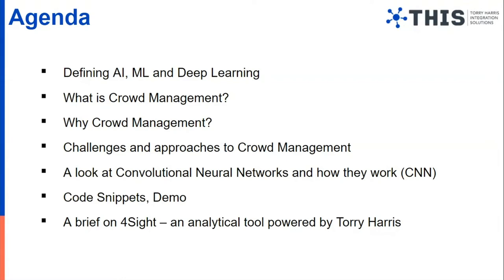Thanks, Kavi. First of all, we will be looking into what is AI, what is ML, and what is deep learning. Then we will look at what is crowd management, why we need crowd management, and what are the challenges and approaches to crowd management. Then we will look at convolutional neural networks and try to understand what they are and how they work, and how they can be used in crowd management. Then we will look at some code snippets and a demo of the application. I will also be giving you a brief on Foresight, an analytical tool powered by Tori Harris.